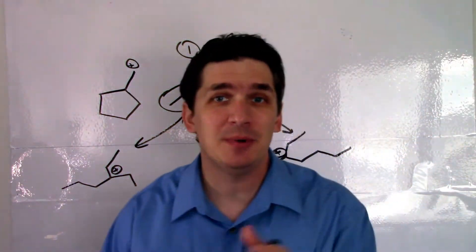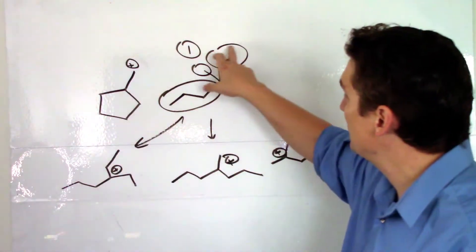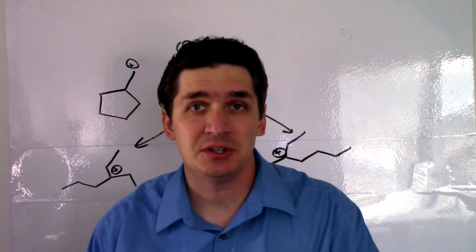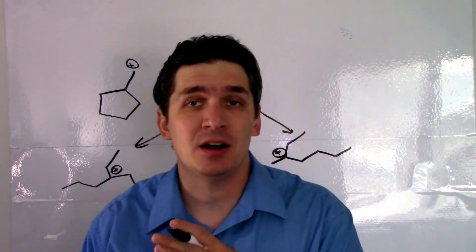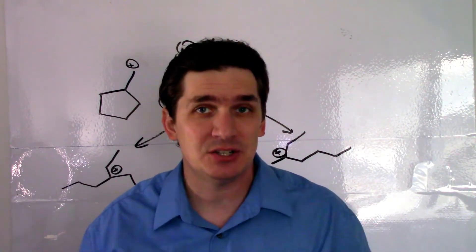So we've actually got three possibilities. We could move the methyl, the ethyl, and the propyl groups, and all these result in a tertiary carbocation. And odds are we will get some mixture of these.